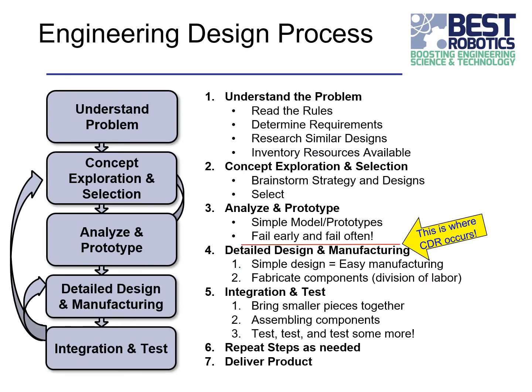The engineering design process is the fundamental process used to design any product — in our example, your robot. You start with understanding the problem. For best, you read the rules, think about them, look at the drawings of the game field, and determine what the requirements are for your robot. You research similar designs — perhaps real-world examples of something similar. And you inventory the resources available: the items in your kit, the software you have, and your access to creating a mini-game field to practice on.